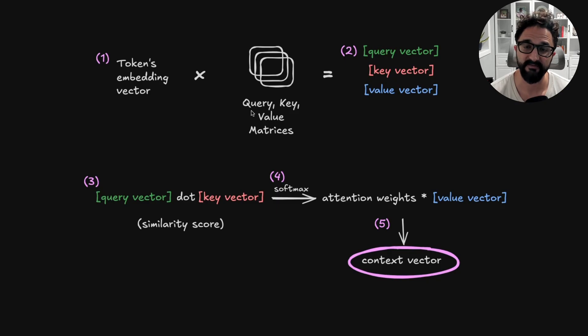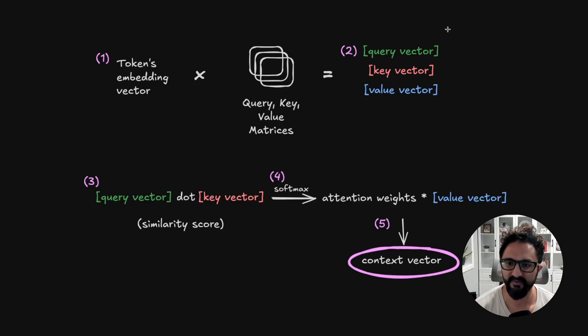This has really been why transformers have been so scalable—because of this idea of parallel computation allowing us to process more data quicker. The query, key, and value matrices here are sized according to your model's architecture. This is a choice you make. These matrices—the values in these matrices—are learned through model training. They're constantly updated. What you do is you take your embedding vector, you multiply by each one of these query, key, value matrices, and you get a query vector, key vector, and a value vector for each token.